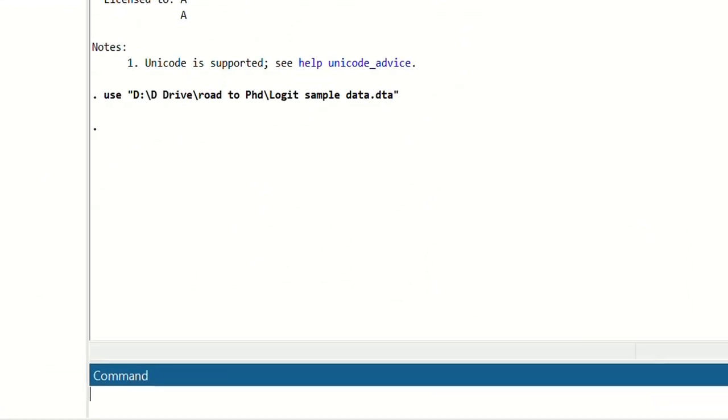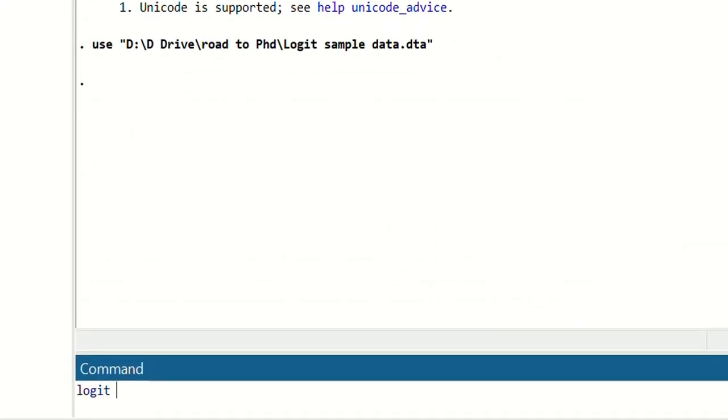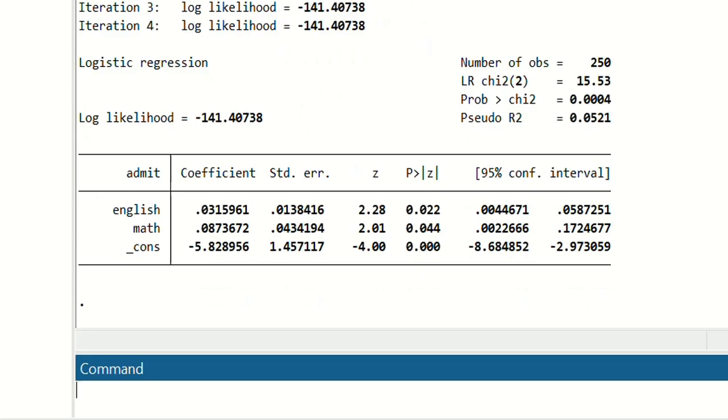Now running the logistic regression is very easy in Stata. We will just write logit, then we will write our dependent variable which is admit, then English and Math. Press enter and these are the results of logistic regression.